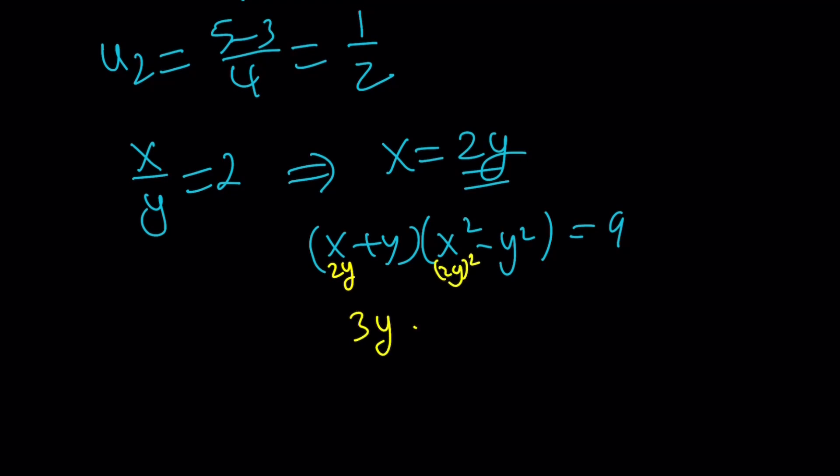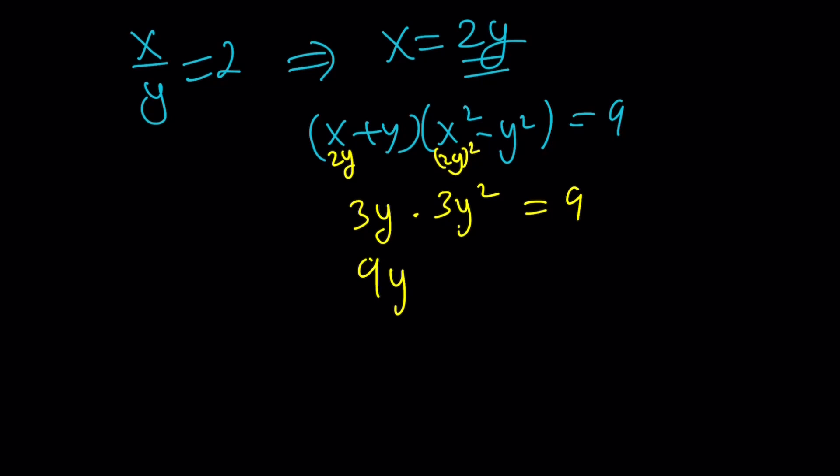Now, I'm going to replace x with 2y. So, this is going to be 2y. And this is going to be 2y squared. So, that's going to give me 3y. 4y squared minus y squared is going to be 3y squared equals 9. And it's going to give me 9y cubed equals 9. And y cubed equals 1. And y equals 1.